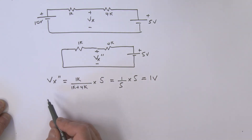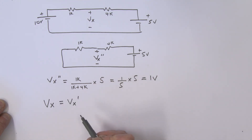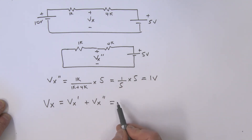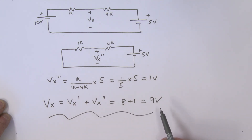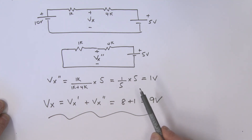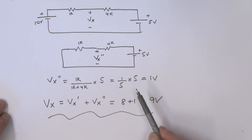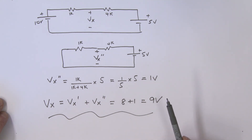We now have the two components due to each source. So Vx equals Vx prime plus Vx double prime — the component due to the 10V source acting alone plus the component due to the 5V acting alone. That gives us 8 + 1 = 9 volts. Using superposition, we turn a multiple-source problem into an easy one by considering one source at a time, zeroing all others, and adding the components together. We'll look at more examples next time.